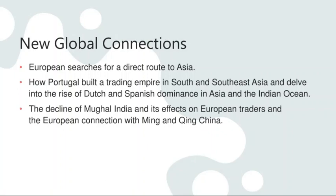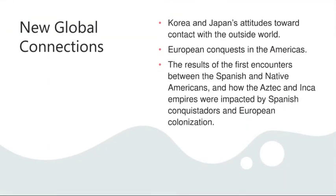We will discuss their different reception to European influence and compare and contrast their reception to Europeans and their ideas of the Renaissance as well. In the final part of the week, continuing on with new global connections, we will talk about Korea and Japan's attitudes towards contact with the outside world. Korea and Japan had conflict amongst each other and chose isolation when dealing with the West. We will discuss the economic, political and social impacts of that, in addition to some interesting reads in the reading corner relating to the literature, art and music of the time.